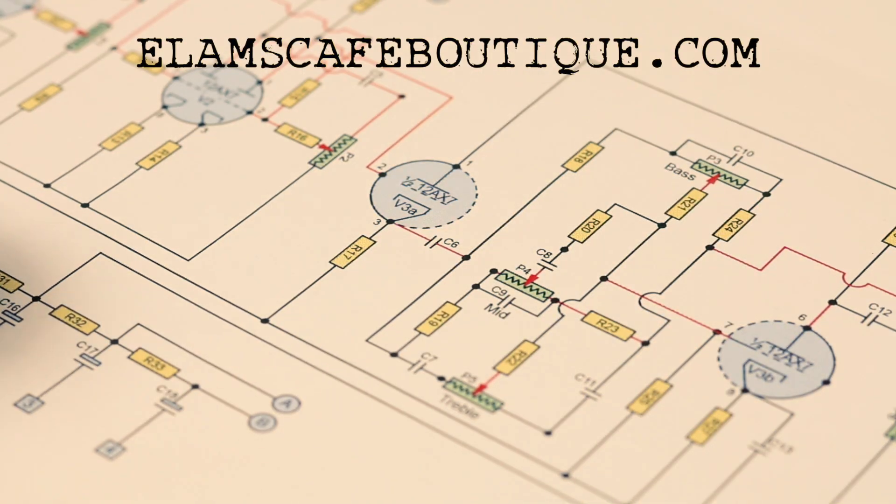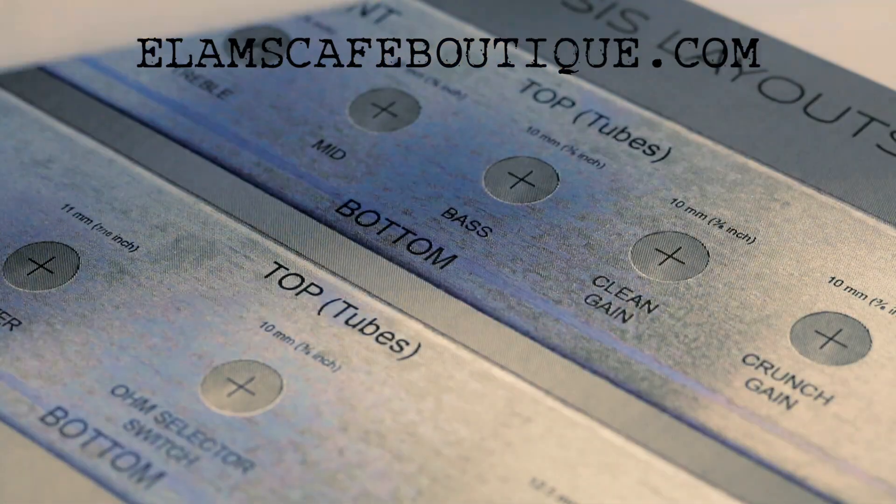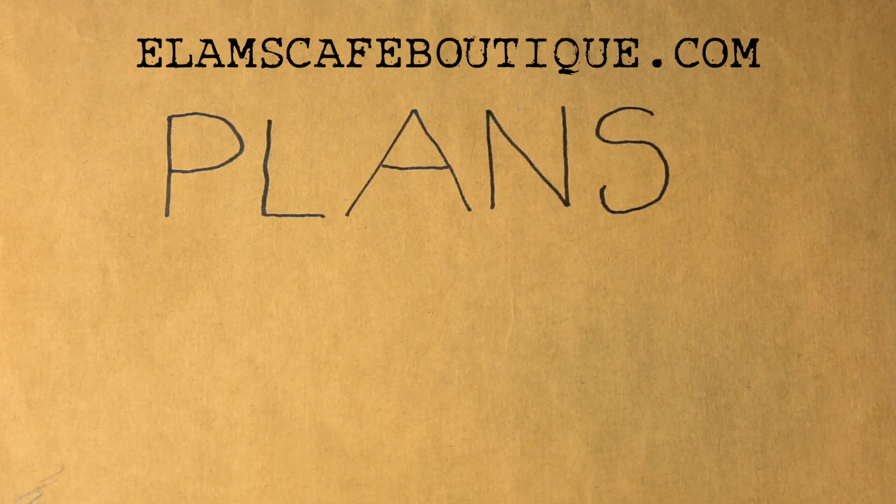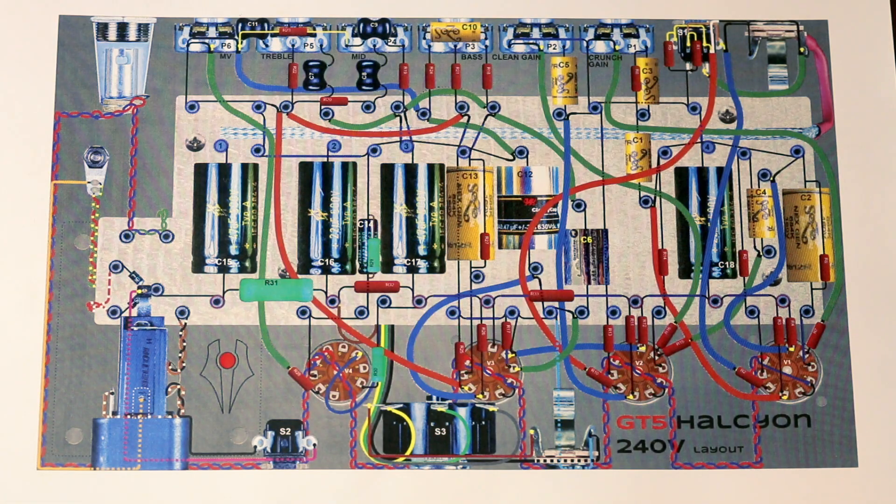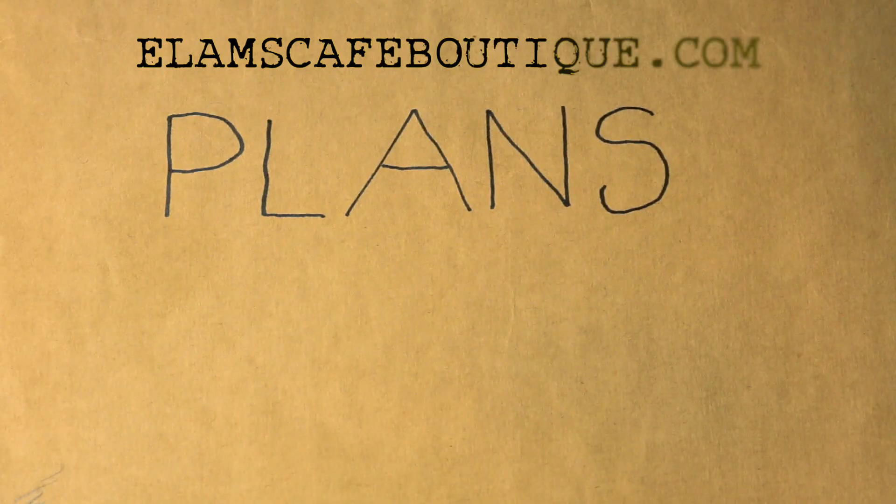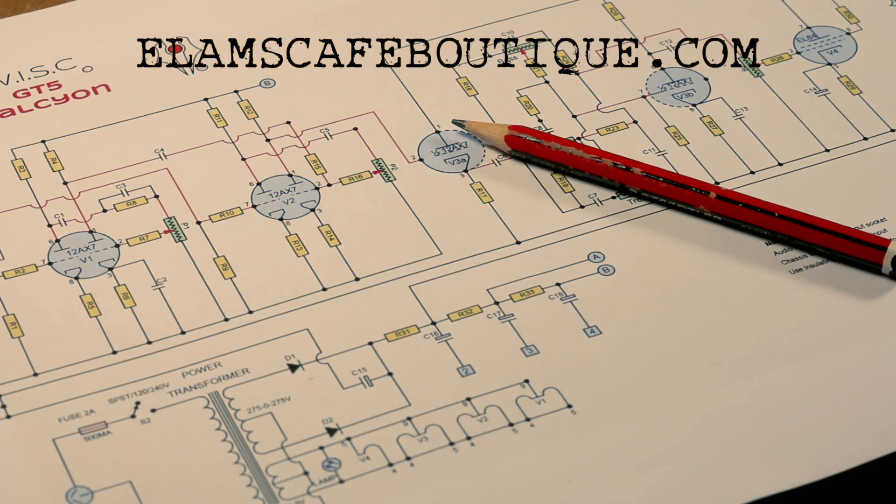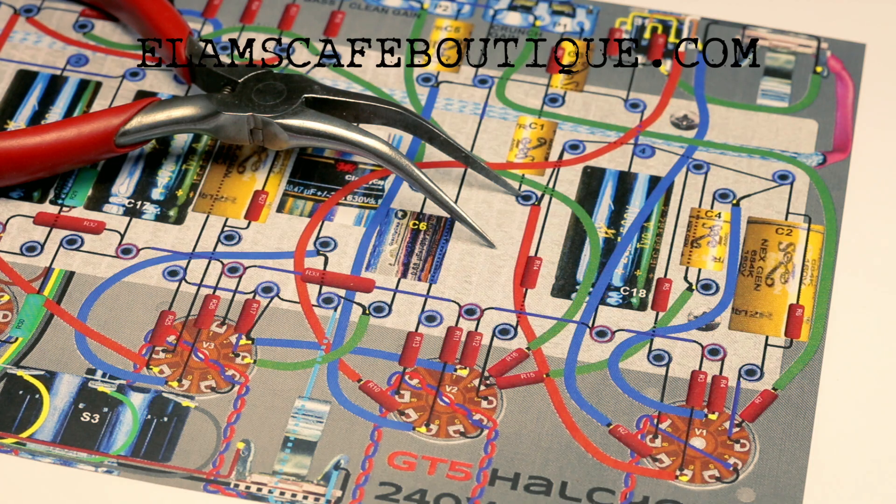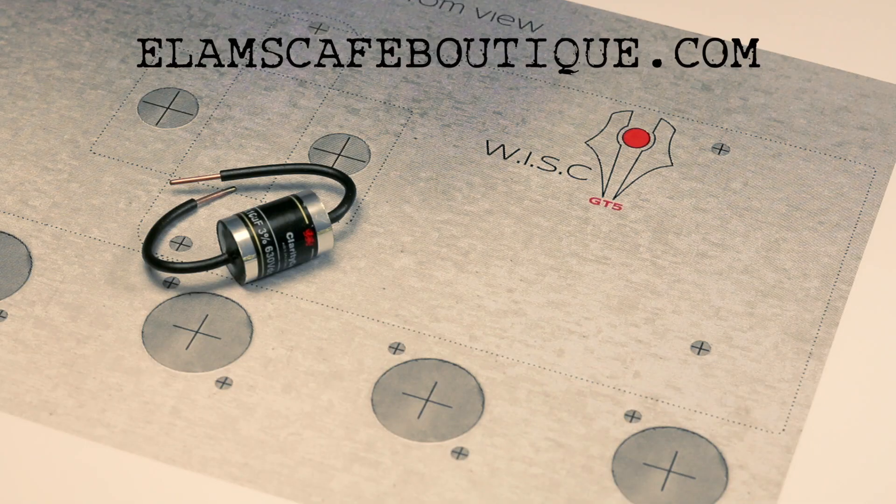To follow along head to elamscafeboutique.com. There you'll find a whole bunch of plan packs that include schematics, layout diagrams and other high quality JPEGs.